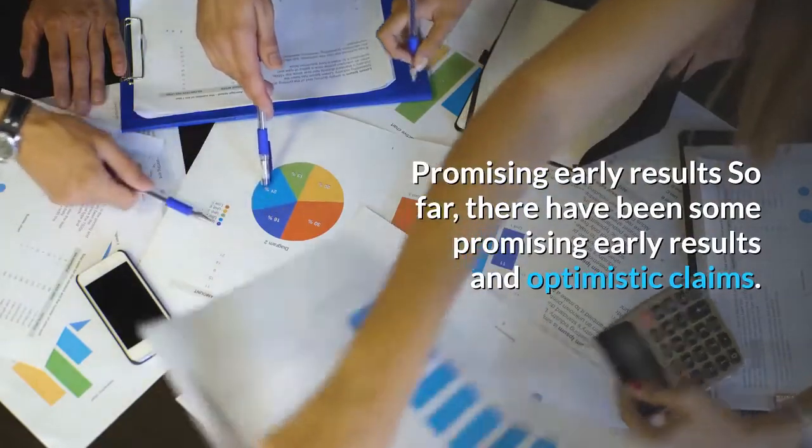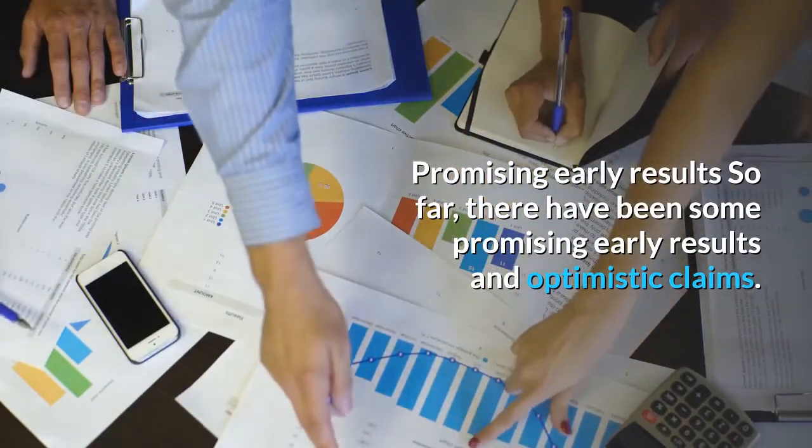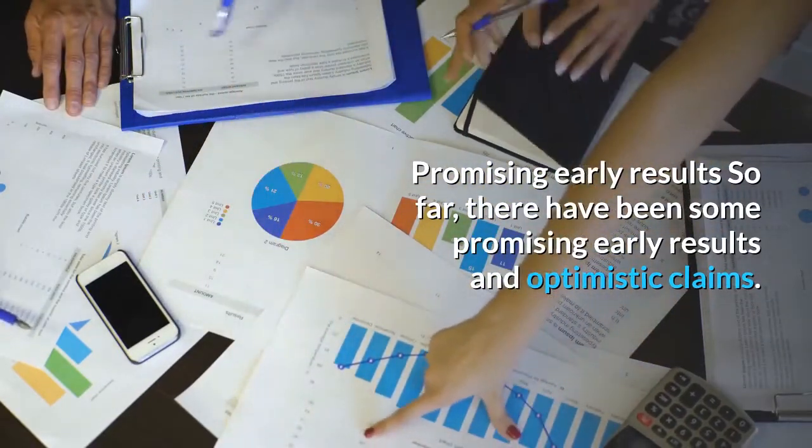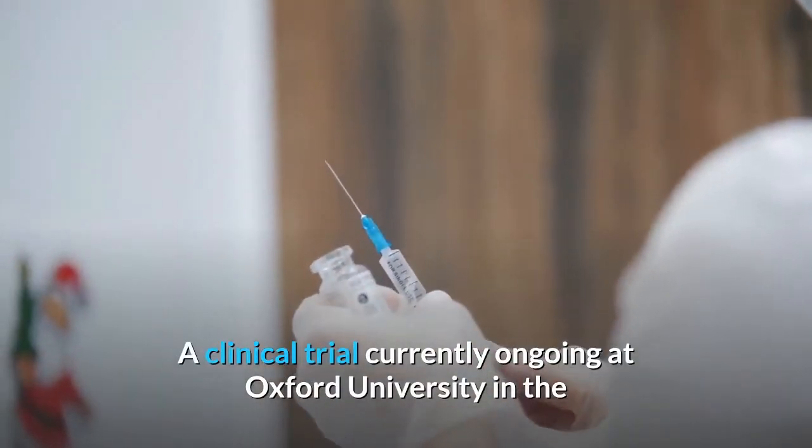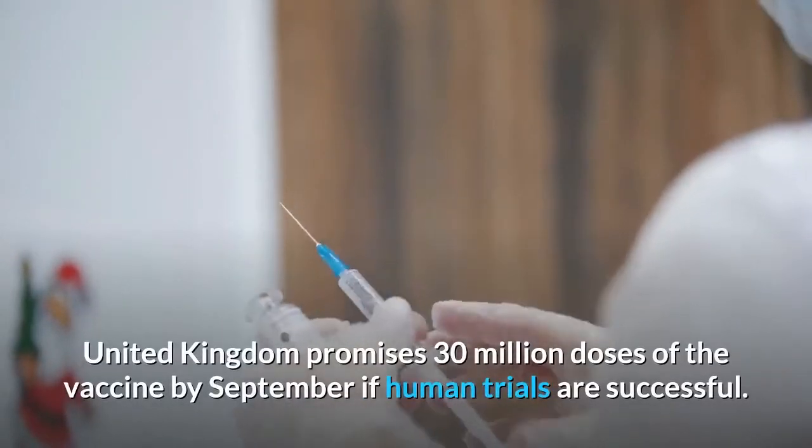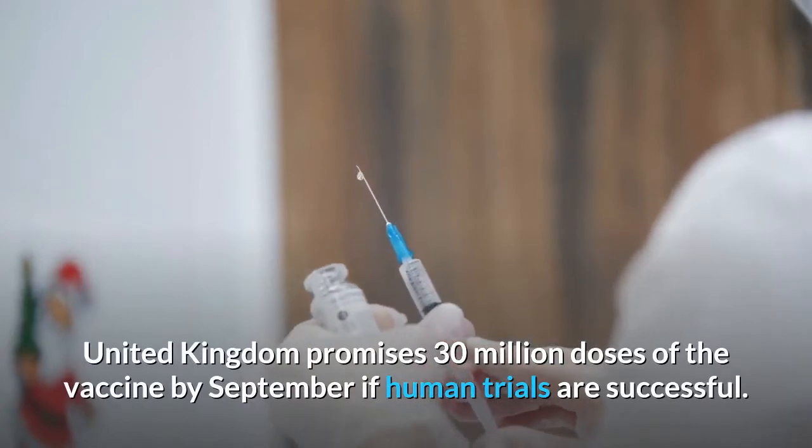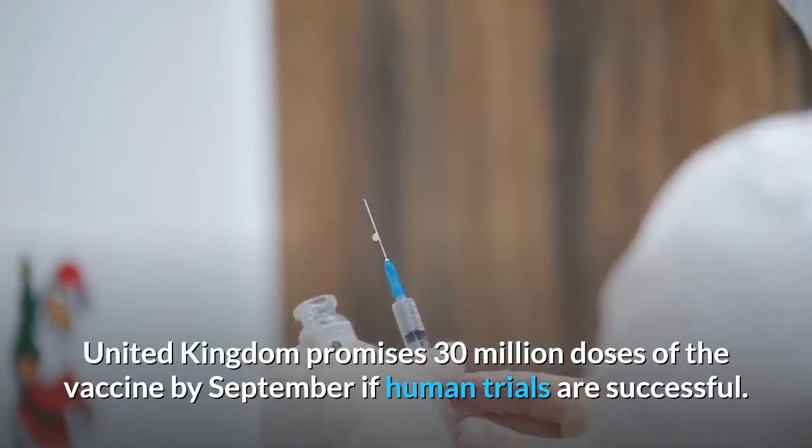Promising early results. So far, there have been some promising early results and optimistic claims. A clinical trial currently ongoing at Oxford University in the United Kingdom promises 30 million doses of the vaccine by September if human trials are successful.